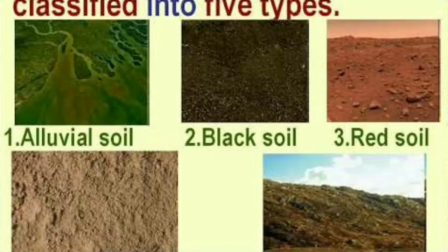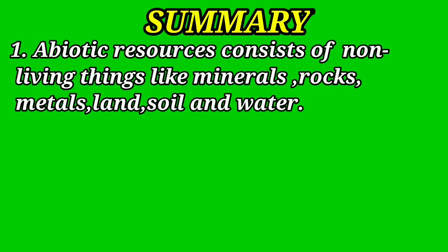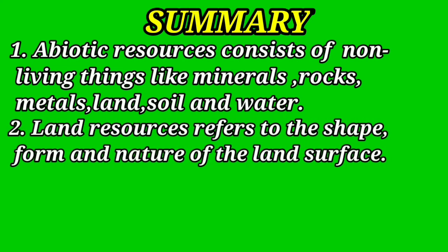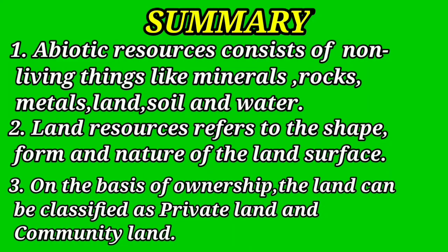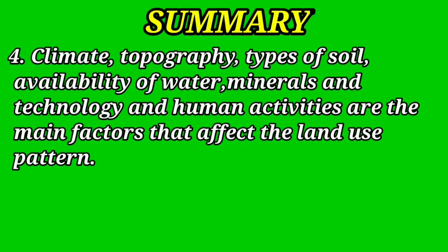In the next class we will be discussing about the other two abiotic factors which are soil and water. Important points from today: abiotic resources consist of non-living things like minerals, rocks, metals, land, soil and water. Land resources refers to the shape, form and nature of the land surface. On the basis of ownership, land can be classified as private and community land. Climate, topography, types of soil, availability of water, minerals and technology are the main factors that affect the land use pattern.